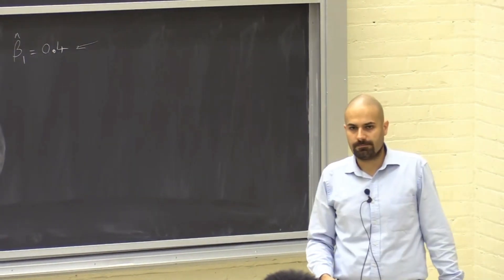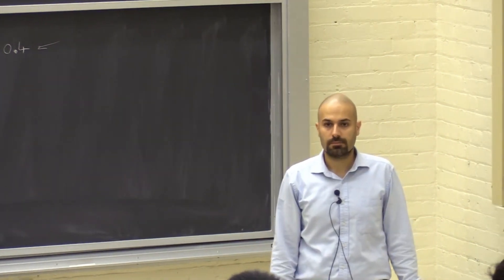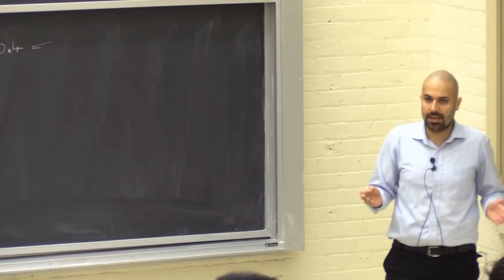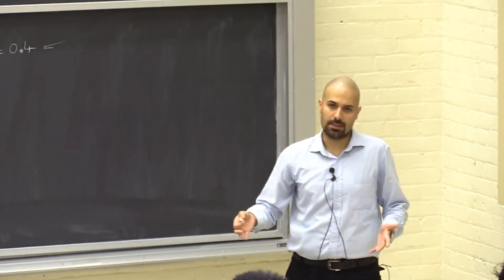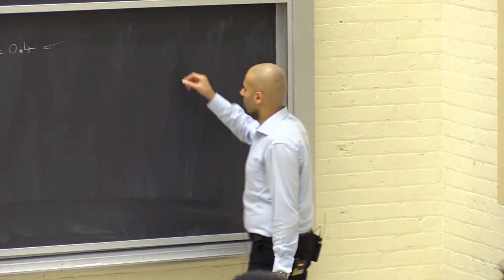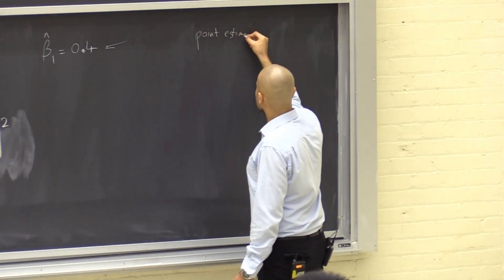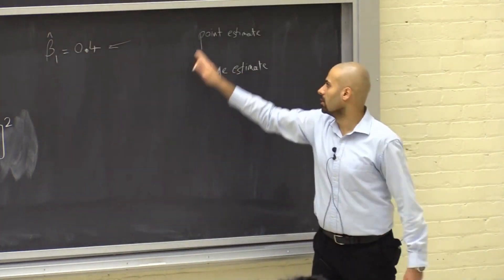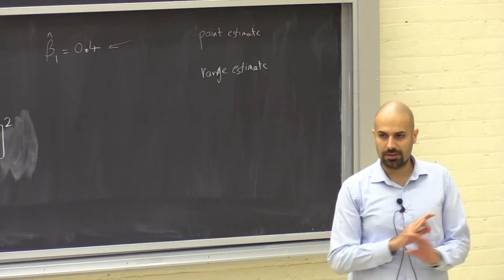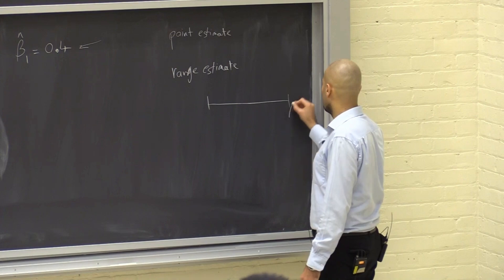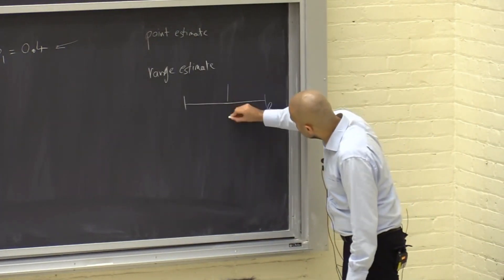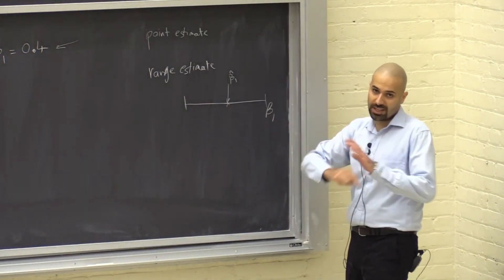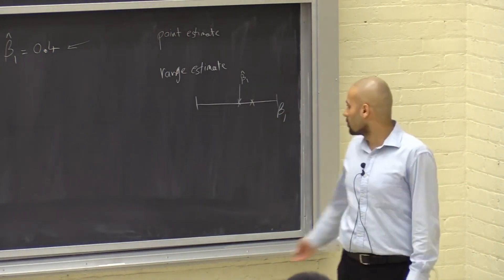But this is a point estimate — what is the reliability of a point estimate? In the space of possibilities for the actual value of beta one, a point estimate says beta one is exactly this one point. The chances that our beta hat one matches perfectly with the actual value of beta one — two points perfectly matching in one-dimensional space — is zero. That's why the reliability of a point estimate is zero. So what can we do about it? If instead of a point estimate we provide a range estimate, there will be some reliability associated with it.